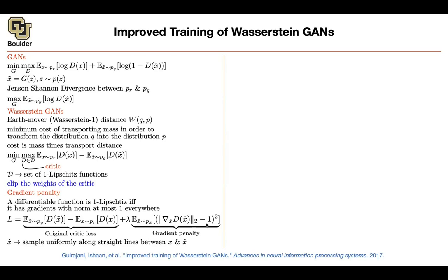Student: If empirically it performs just as well, that makes sense. But intuitively, couldn't you just take the max of the norm minus one and zero, making it one-sided? Instructor: You're right, but the problem with using functions like max is that they are not differentiable. You want your objective function to be nice and differentiable as well. It is one matter to write a loss function, and another matter for the loss function to be trainable. This loss function is trainable; using max might make it harder to converge.